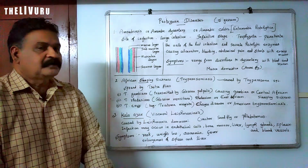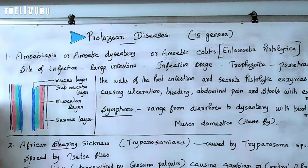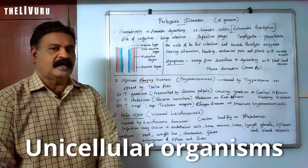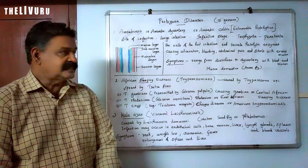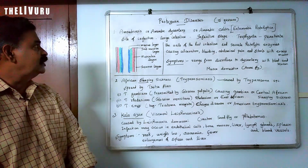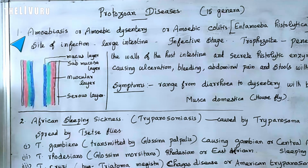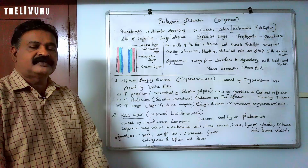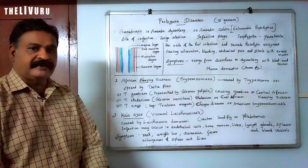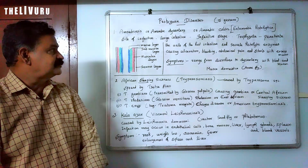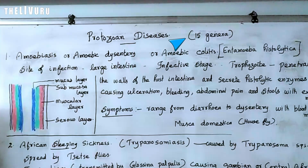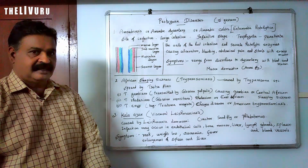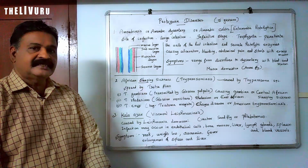In this video we are going to discuss about protozoan diseases. Protozoans are one-celled organisms, otherwise called unicellular organisms. We are going to discuss four protozoan diseases: the first one is amoebiasis or amoebic dysentery, second is African sleeping sickness, third is kala-azar, and the fourth is malaria. In your book, 15 genera of protozoans are normally found in the human body as pathogens.